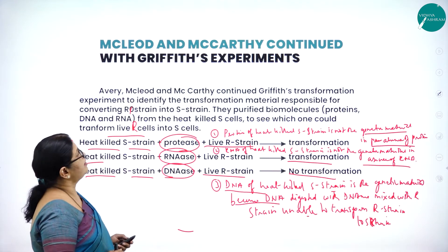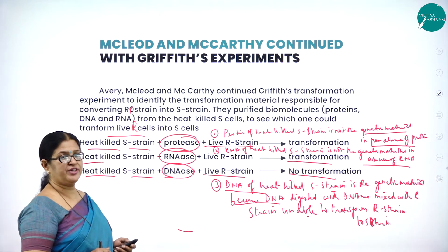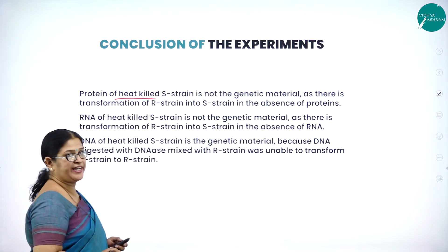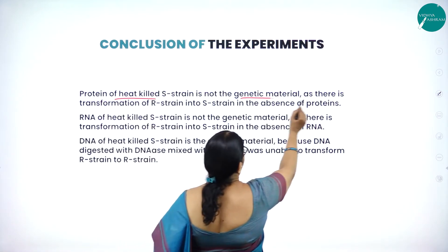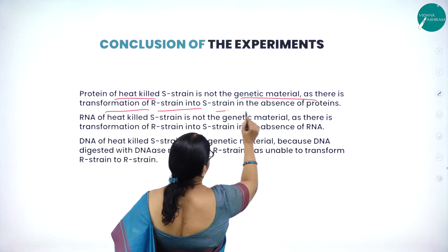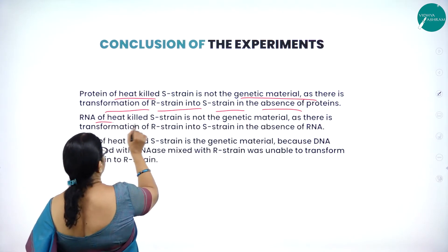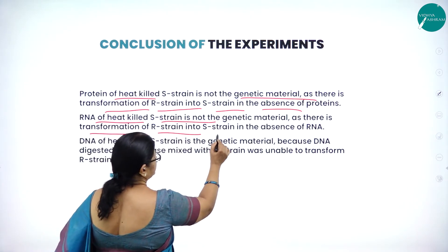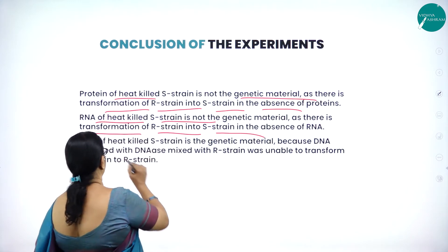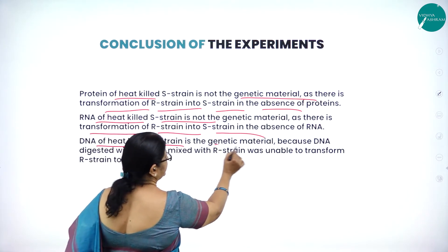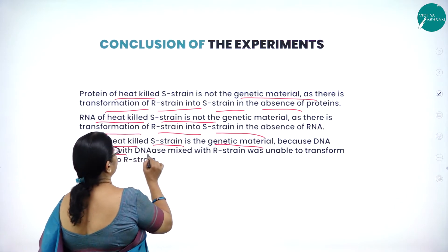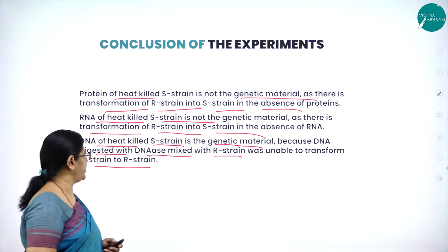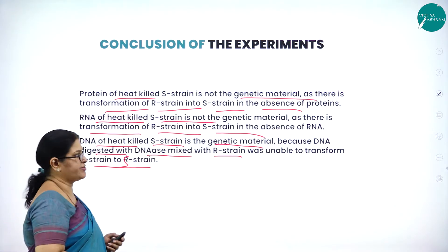The conclusion: protein of heat-killed S-strain is not the genetic material, as there is transformation of R-strain into S-strain in the absence of proteins. RNA of heat-killed S-strain is not the genetic material, as transformation still occurs in the absence of RNA. DNA of heat-killed S-strain is the genetic material, because DNA digested with DNase mixed with R-strain was unable to transform R-strain into S-strain.